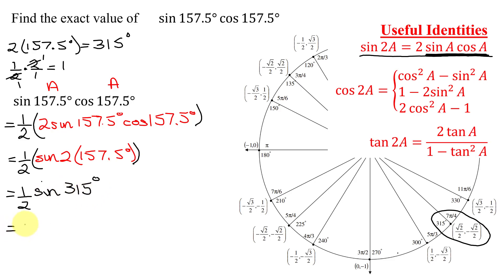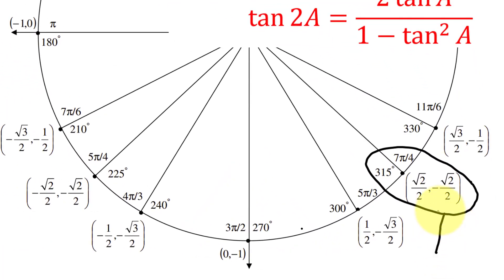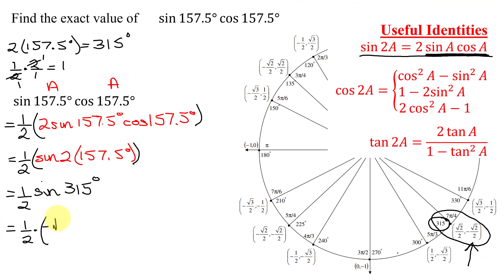Now I can just say this is 1 half times the sine of 315 degrees. That is the y-coordinate of the point on the unit circle. So the y-coordinate is negative the square root of 2 over 2. So simplifying, a positive times a negative is a negative. 1 times the square root of 2 is the square root of 2. 2 divided by 2 times 2 is 4. So that is the exact value for the expression we were given.